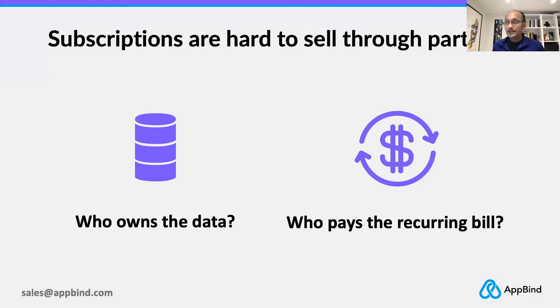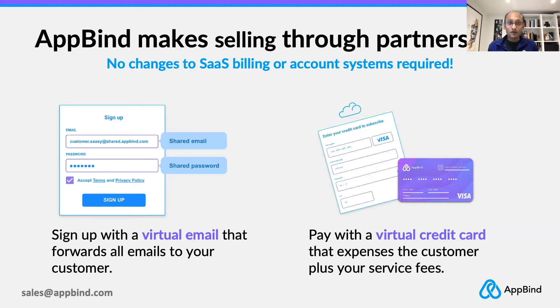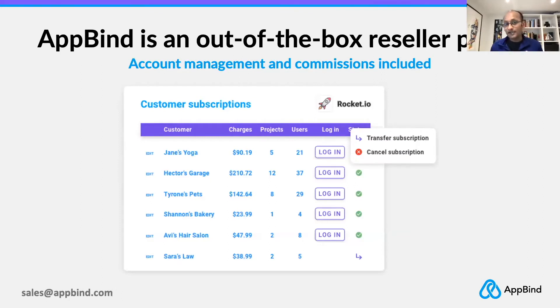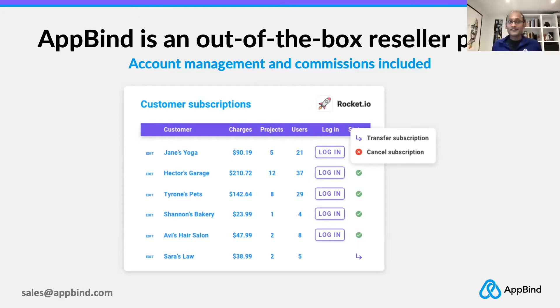I am the plucky leader of the Cloud Software Association, but I do have my own company now. AppBind this year is really working on SaaS companies. The problem we're trying to solve is: why is it so hard to sell subscription software through partners? Customers own their own data, partners struggle to create accounts, and recurring billing is a nightmare for accounting and financial risk — which is why we almost always do a workaround like referrals. We actually support service companies to build businesses around you. Instead of using their own email addresses and credit cards, your service partners can use AppBind's virtual email and credit card to sign up and manage licenses. We automatically forward all emails to their customers and all charges are automatically expensed. And for you, we have a turnkey reseller portal you can just turn on today — no engineering needed — to start activating your service partners.